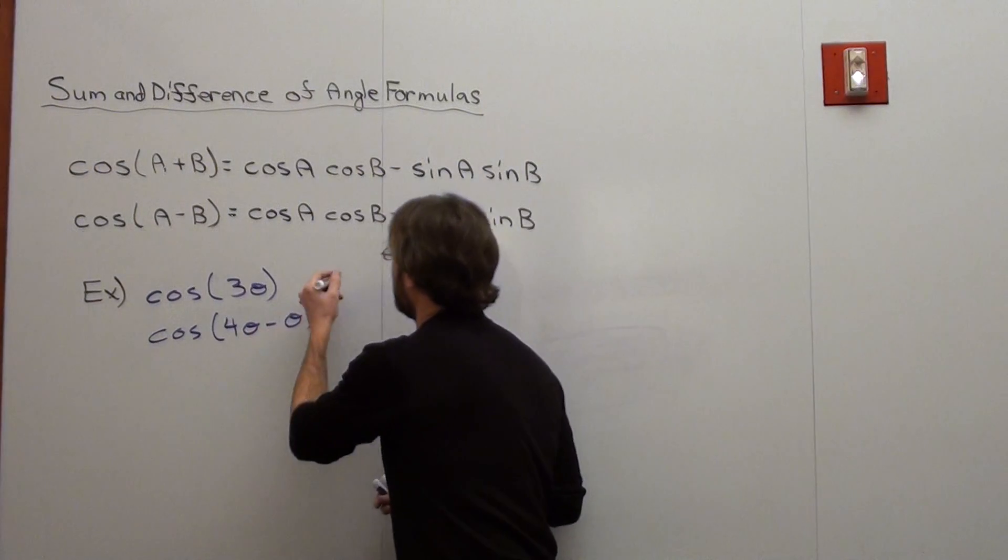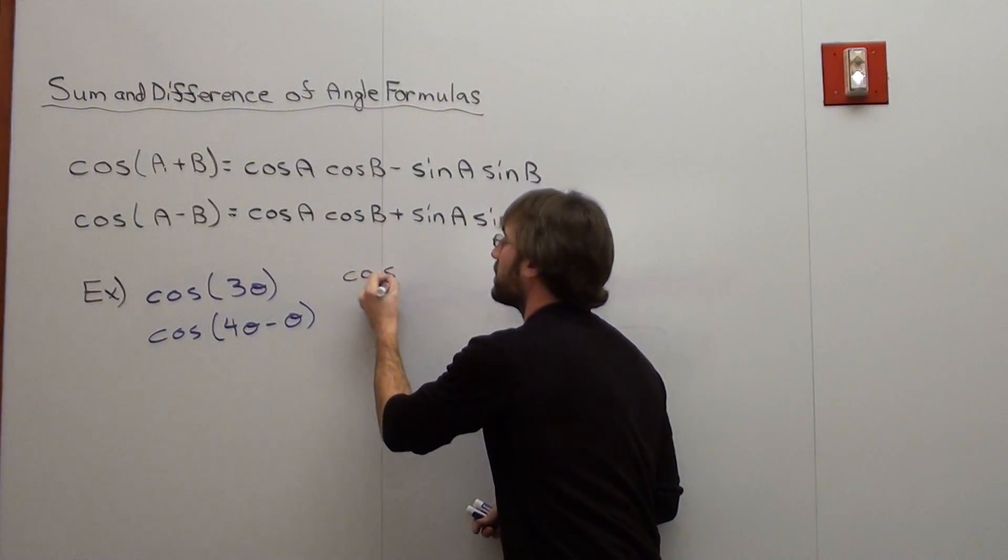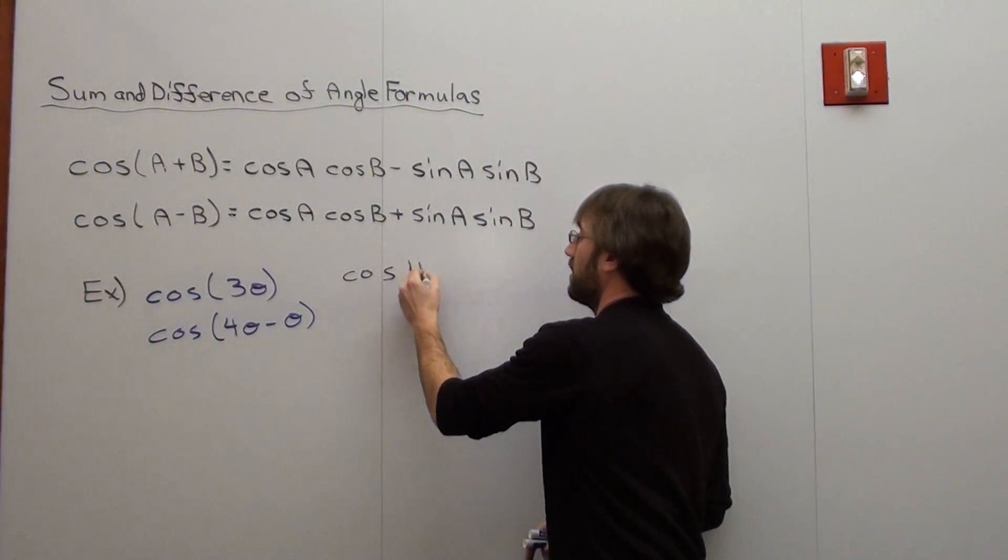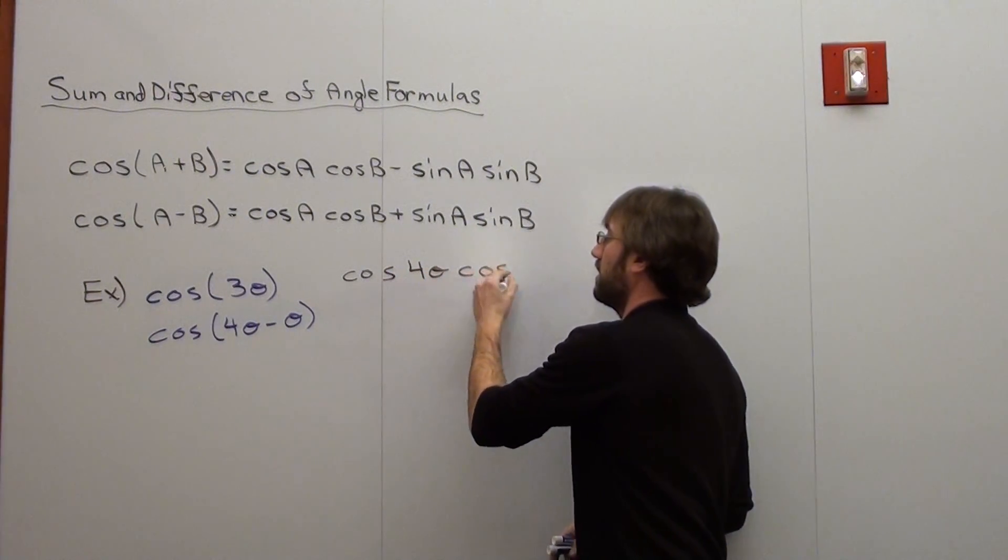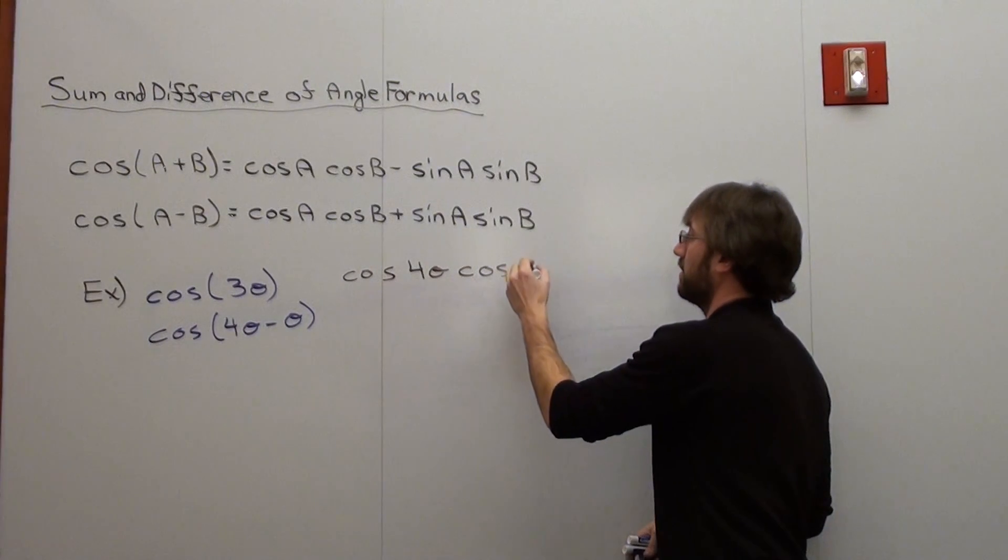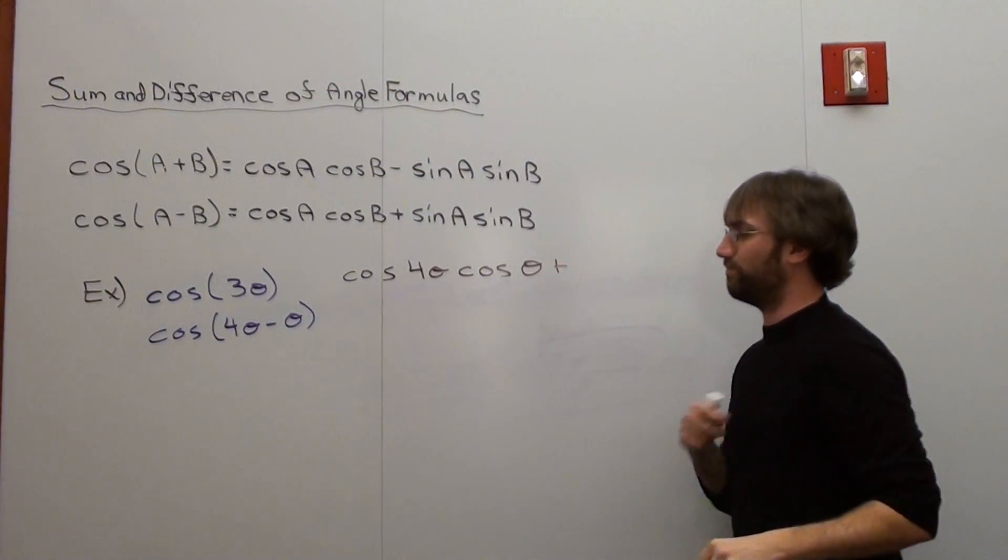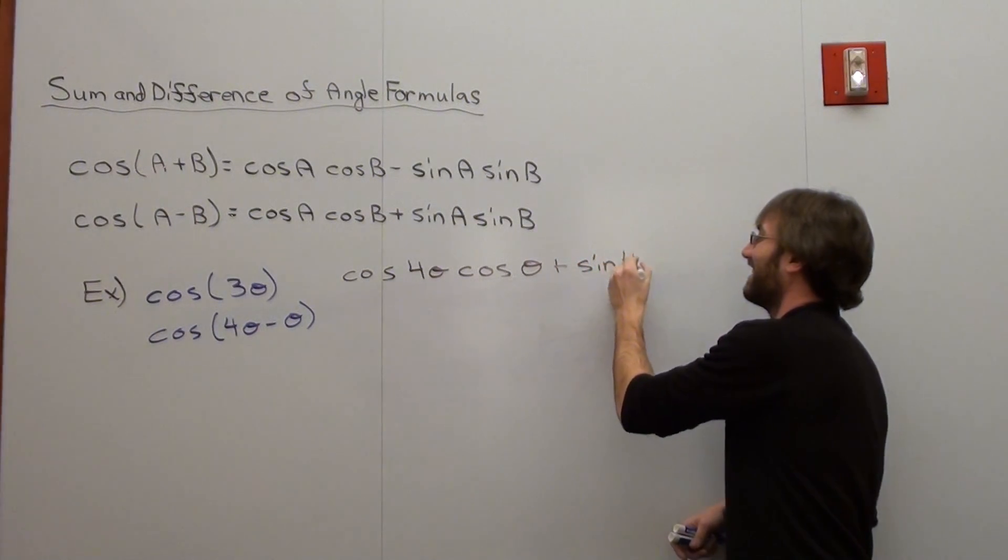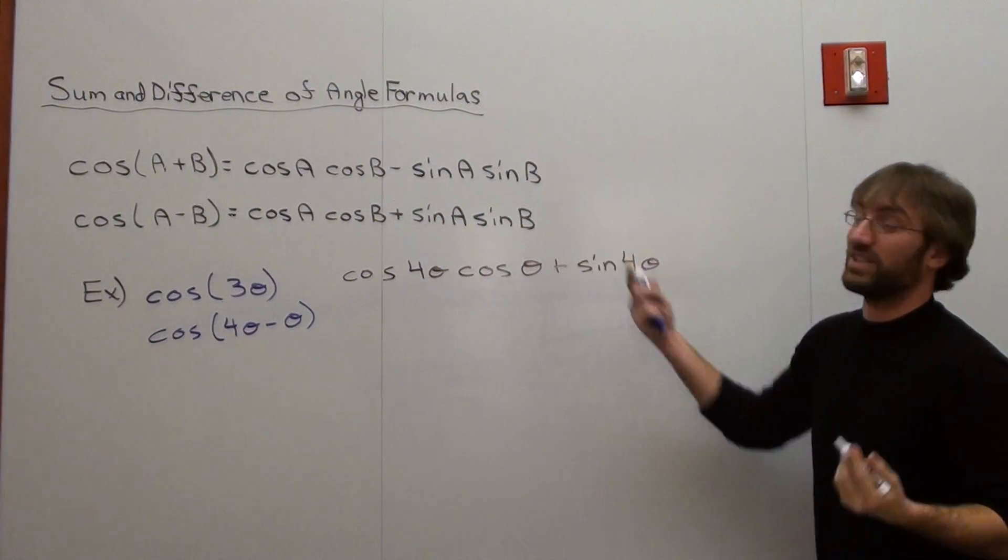So, I've got the cosine. Yeah, I'm going to go ahead and write it over here. Cosine of the first angle, which is 4 theta, times the cosine of the second one, which is theta, plus, pardon me, sine of 4 theta, times the sine of theta.